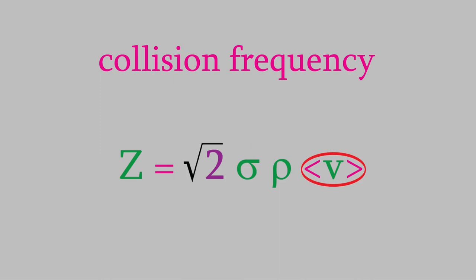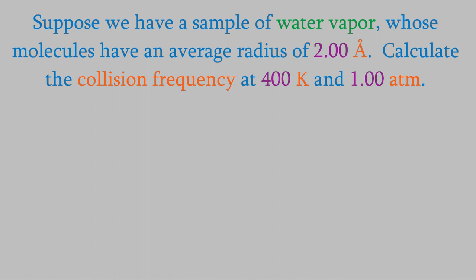Let's try using this equation. Suppose we have a sample of water molecules, which have an average radius of 2.00 angstroms. What is the collision frequency between the water molecules in a vapor at 400 degrees Kelvin and 1.00 atmospheres? We'll use this equation to find the collision frequency, so we'll need to calculate each of the three terms in the equation.